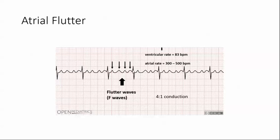You're going to see those flutter waves. Typically they're in a ratio — a 2 to 1, a 3 to 1. As shown here, this one is a 4 to 1 conduction.